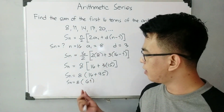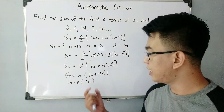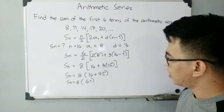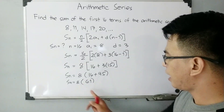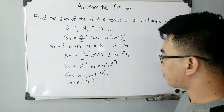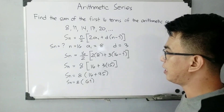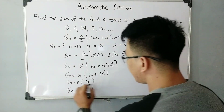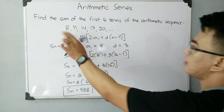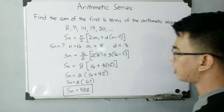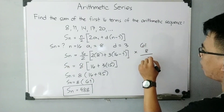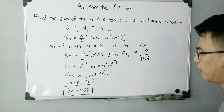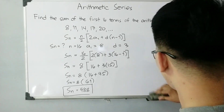To finally find the sum of the 16 terms, we multiply 8 and 61. 8 times 60 is 480, and 8 times 1 is 8, so the answer is 488. S sub n = 488. That is the sum of the first 16 terms of the sequence 8, 11, 14, 17, 20. Let's verify: 61 times 8 — 8 times 1 is 8, 8 times 6 is 48 — so the answer is 488.